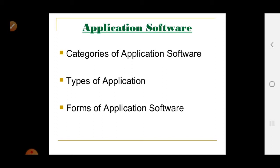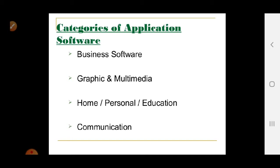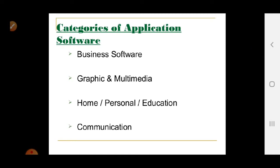There are different categories, types, and forms of application software. Categories include: business software, used for business purposes; graphics and multimedia; home and personal; education; and communication.